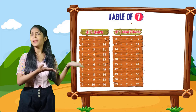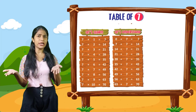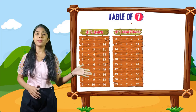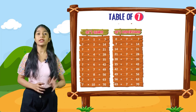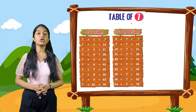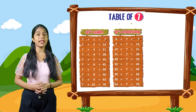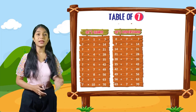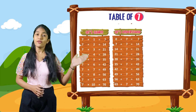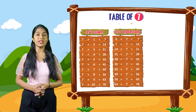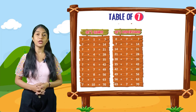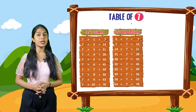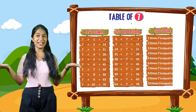So now let's understand. 0 plus 7 is equal to 7. 7 plus 7 is equal to 14. 14 plus 7 is equal to 21. 21 plus 7 is equal to 28. 28 plus 7 is equal to 35. 35 plus 7 is equal to 42. 42 plus 7 is equal to 49. 49 plus 7 is equal to 56. 56 plus 7 is equal to 63. 63 plus 7 is equal to 70.